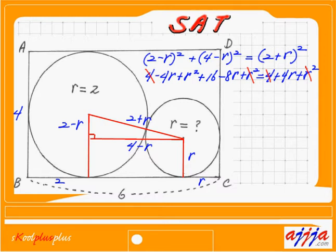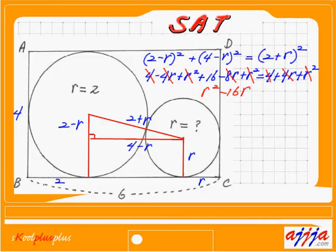I'm going to move everything to the left-hand side. Anything I use, I scratch first — otherwise you get confused. So R squared minus R squared cancels. Then minus 4R minus 8R gives minus 12R. Moving the remaining term over gives an additional minus 4R, so totally minus 16R.